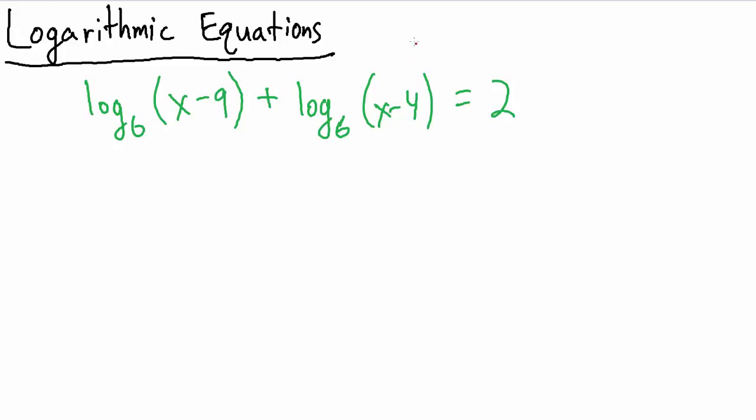The way we're going to use the product rule is base 6 log of m plus base 6 log of n equals base 6 log of m times n.